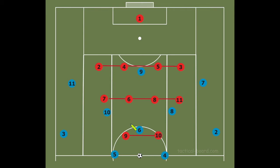Another principle of zonal defending is keeping the space between the lines compact and easy to access for each defender. Typically the coach will give a general rule of thumb declaring how much space should be between each line. A lot of coaches say it should be no more than 30 meters from the defensive line to the forward line, therefore leaving about 15 meters in between each line. This can vary, and sometimes teams will become very compact, leaving only 10 yards in between.